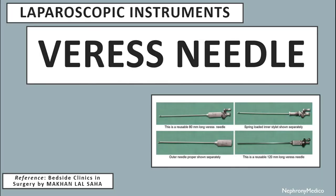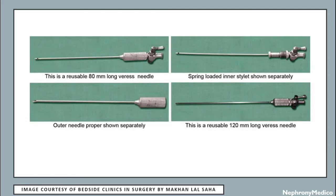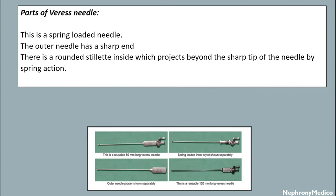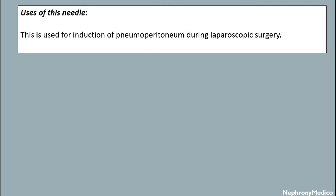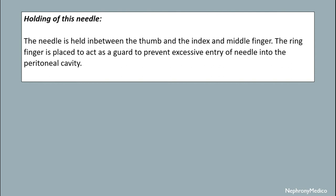Let's talk about the Veress needle, which is a laparoscopic instrument. This is a picture showing the Veress needle. Parts: it is a spring-loaded needle. The outer needle has a sharp end and there is a rounded stylet inside which projects beyond the sharp tip of the needle by spring action. Uses: it is used for introduction of pneumoperitoneum during laparoscopic surgery. Holding: the needle is held between the thumb and the index and middle finger, with the ring finger placed as a guard to prevent excessive entry of the needle into the abdominal cavity.